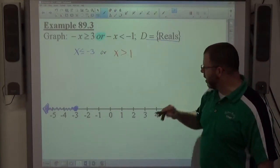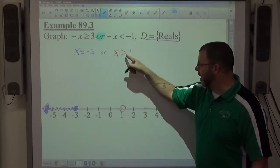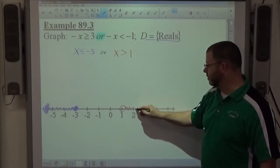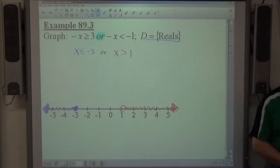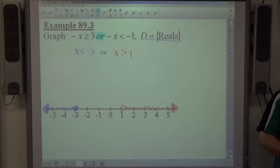x greater than 1, still real numbers. Open circle at 1 because it's not equal to. Greater than goes to the right. That is the graph of that answer.